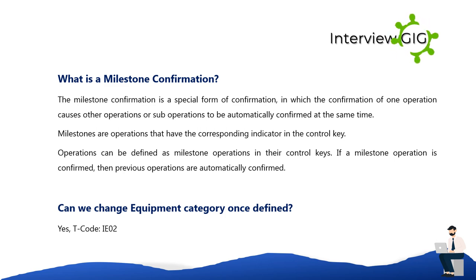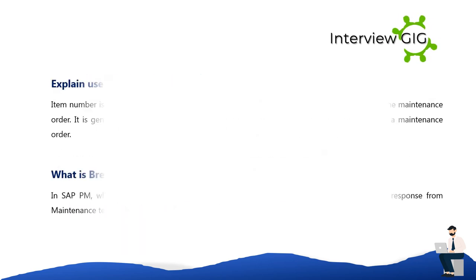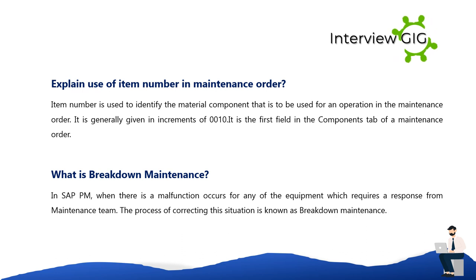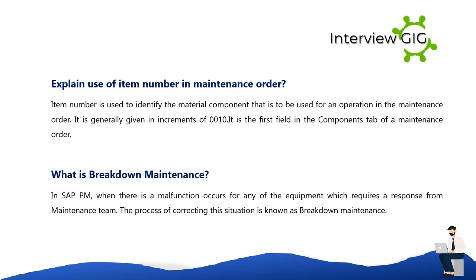Can we change equipment category once defined? Yes, using T-code IE02. What is the use of an item number in a maintenance order? The item number is used to identify the material component that is to be used for an operation in the maintenance order. It is generally given in increments of 0010 and is the first field in the components tab of a maintenance order.